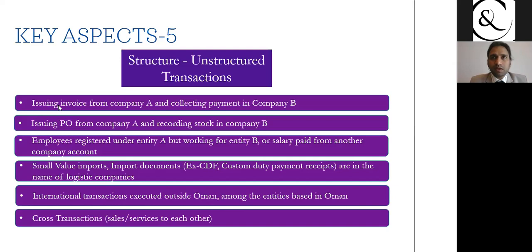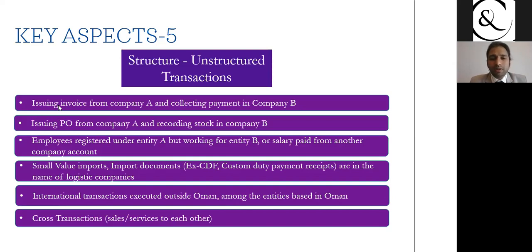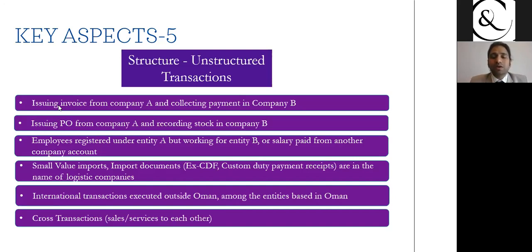One more type of unstructured transaction is cross-payments adjusted between entities — for example, two entities working for each other on different activities with hidden adjustments made through credit notes. After VAT, you can adjust the payment, but both activities will be considered separate and you shall be required to issue a tax invoice and charge VAT on each.